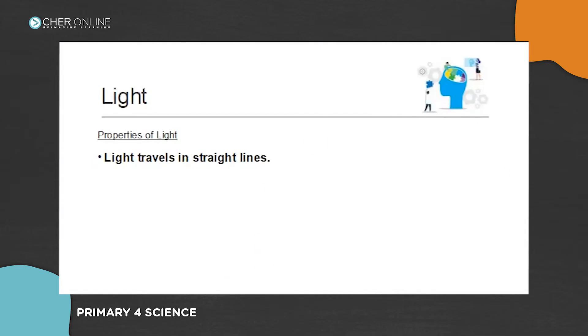First properties of light, which is the most important property of light: light travels in a straight line.